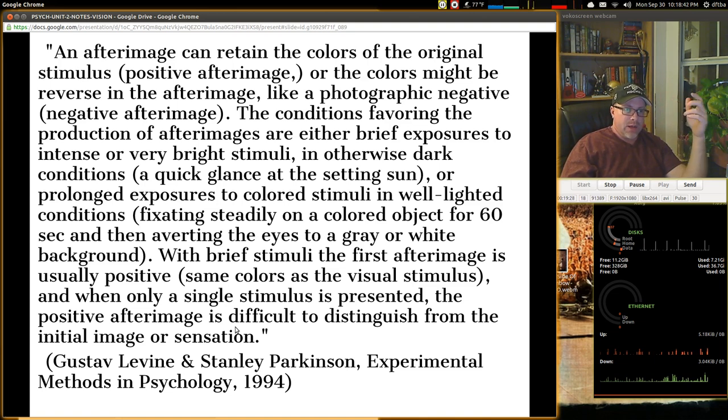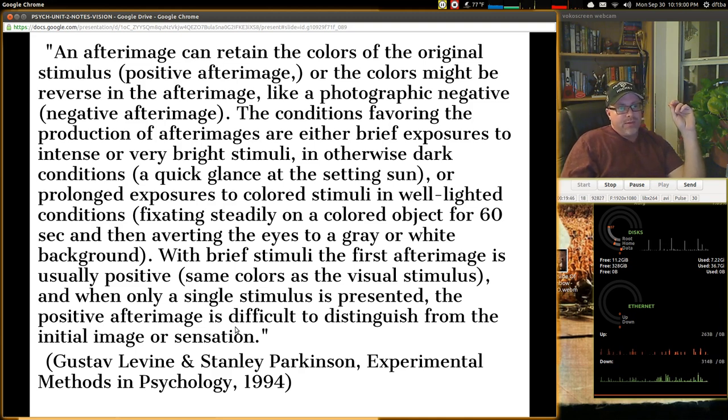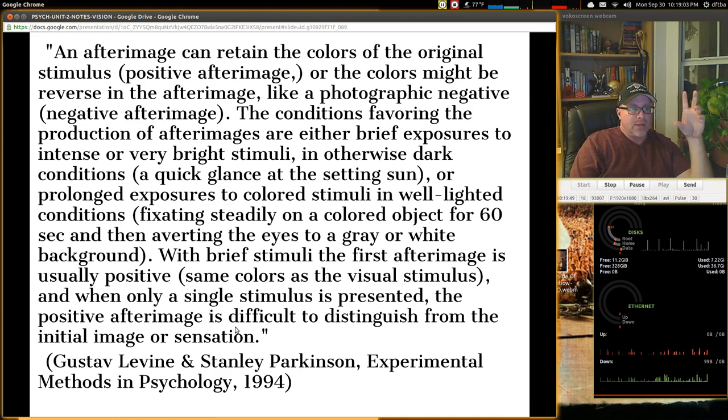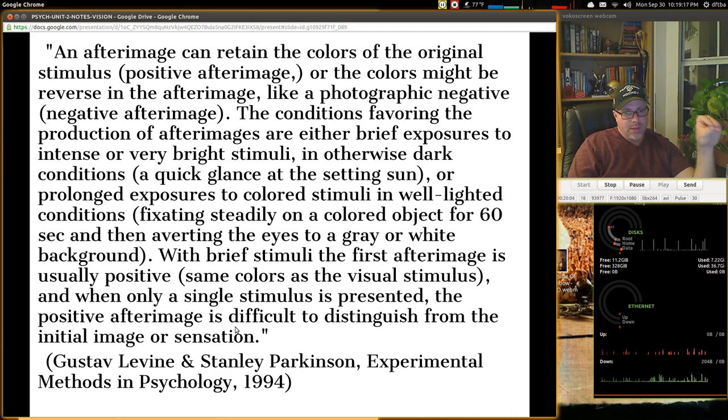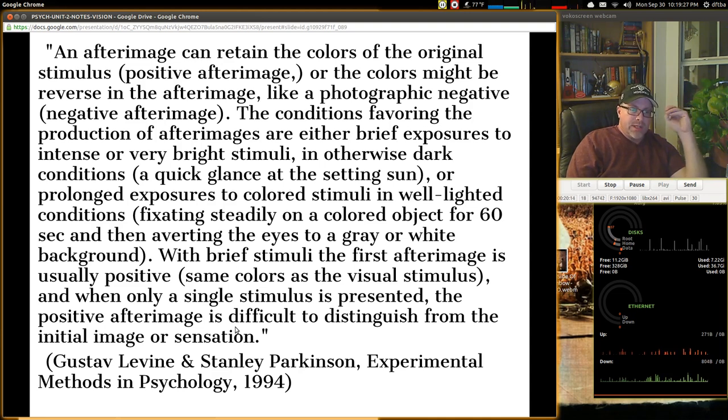The conditions favoring the production of after images are either brief exposures to intense, very bright stimuli, or other dark conditions, like a quick glance at the setting sun. We've all done that, and then you've seen spots. Or prolonged exposure to colored stimuli in well-lighted conditions. So if you've had a fixating steadily on a colored object for like 60 seconds, and then you avert the eyes to a gray or white background, you're going to see this problem where your eyes are so overstimulated it's having trouble adjusting back. So your brief stimuli, the first after image, is usually positive, the same colors as the visual stimulus. And when only a single stimulus is presented, the positive after image is difficult to distinguish from the internal image or sensation.